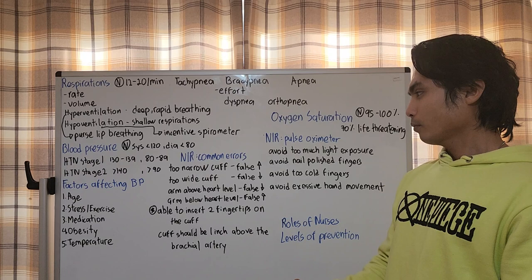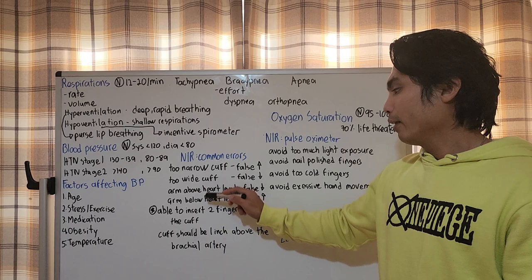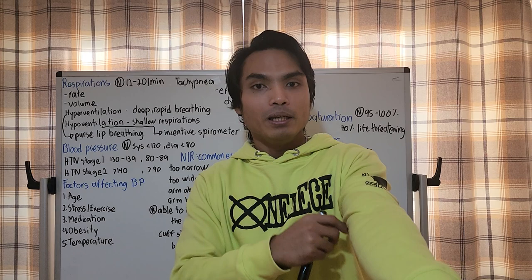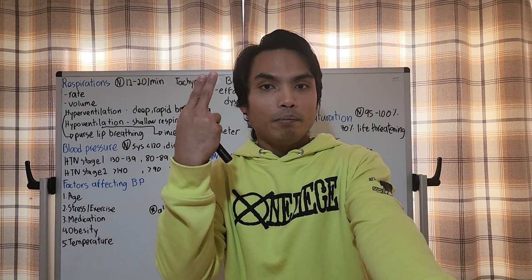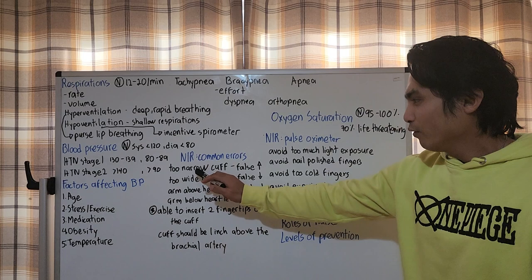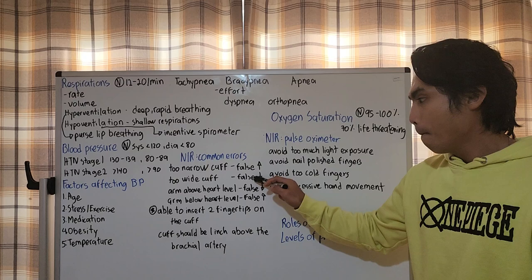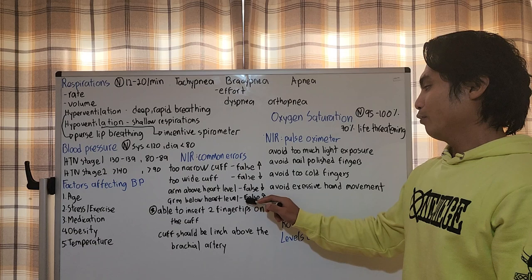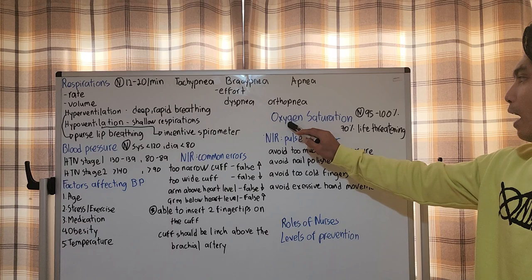Nursing responsibility - common errors when taking blood pressure. If the cuff is too narrow, it is falsely high. If too wide, falsely low. The cuff position should be one inch above the brachial pulse, and you should be able to insert two fingers. If the arm is above heart level, that's falsely low. If the arm is below heart level, that's falsely high.